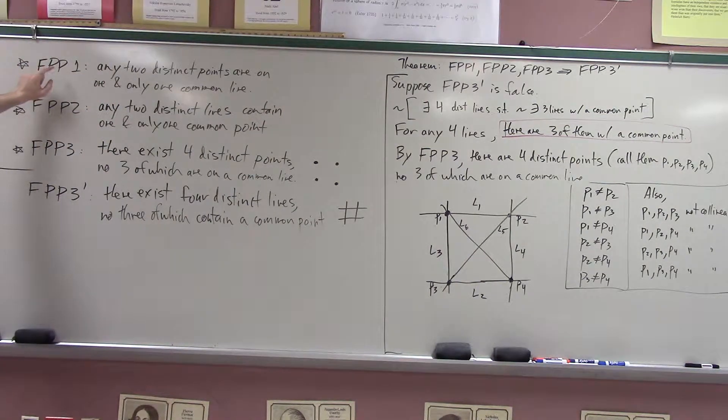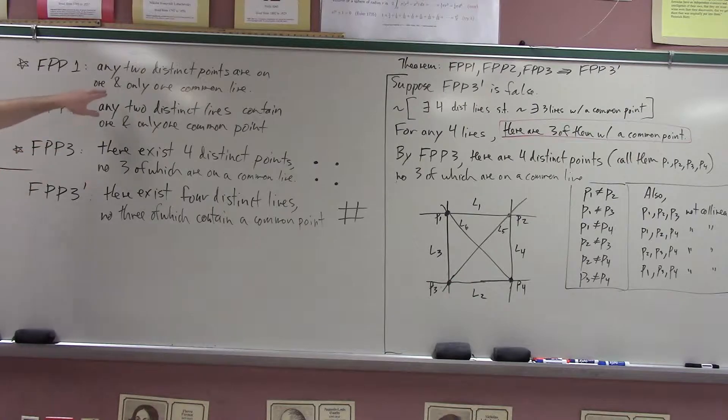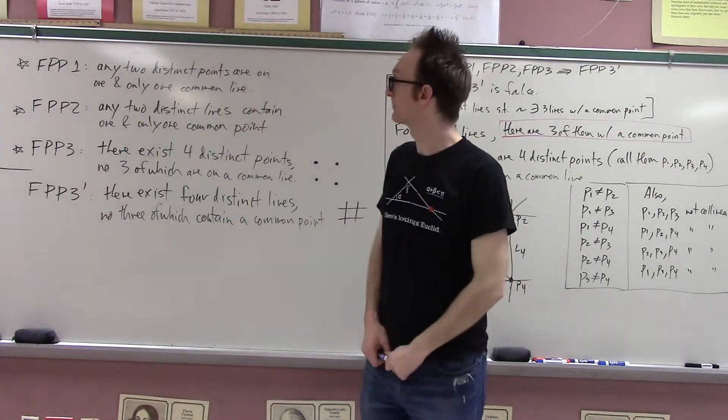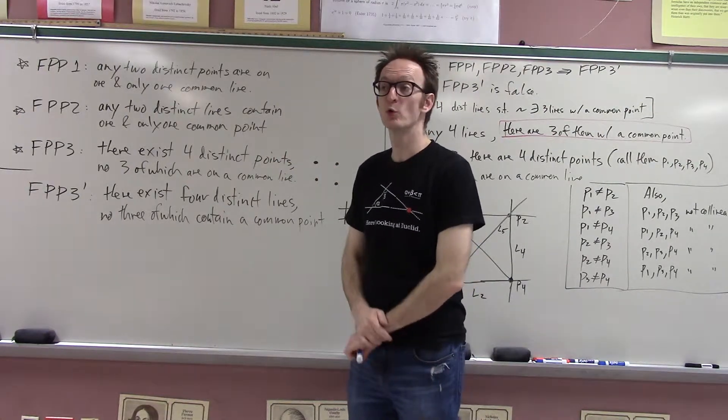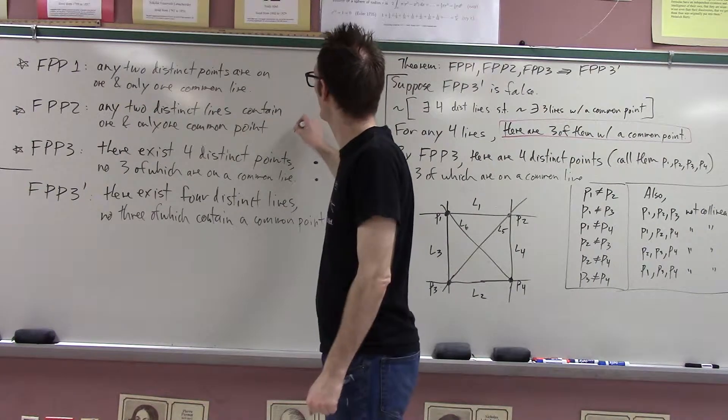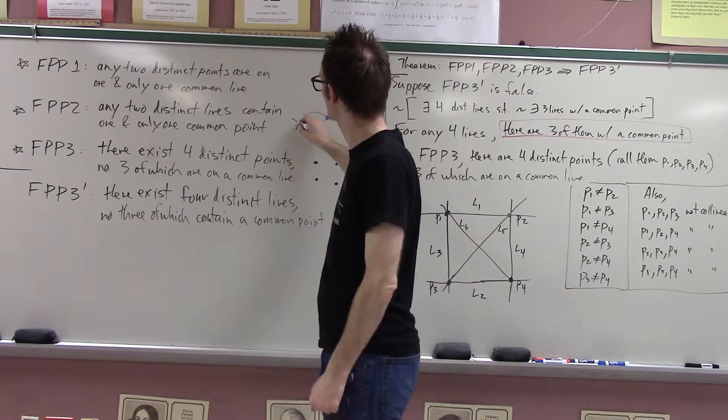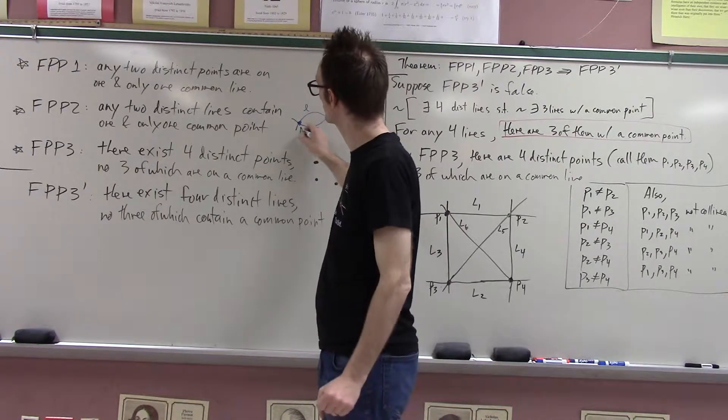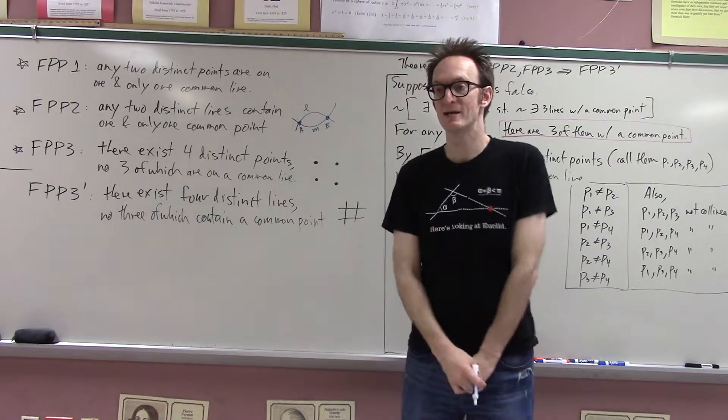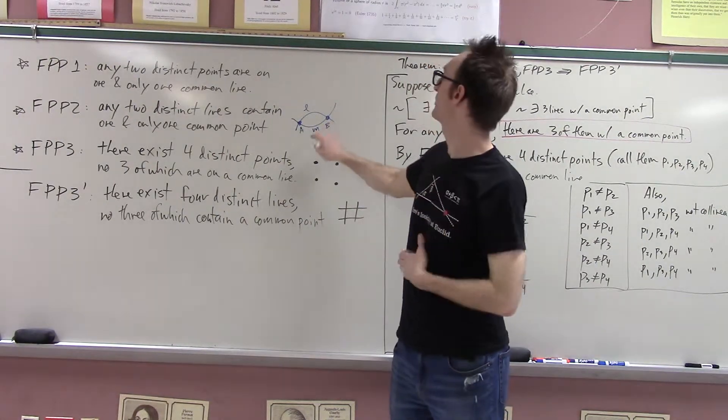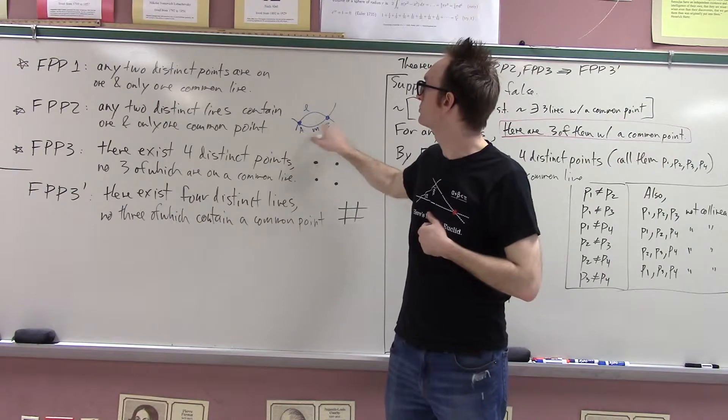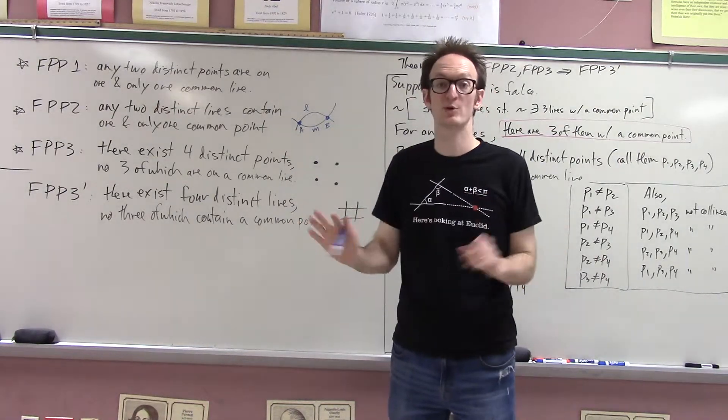We have the axioms for a finite projective plane. Just to quickly recap, a finite projective plane is any geometry which satisfies the following axioms. Through any two distinct points there is exactly one line. Through any two distinct lines there's exactly one point, which rules out the configuration in which two distinct lines L and M meet at two distinct points. That cannot happen and it is a powerful way of creating a contradiction in one of your proofs.